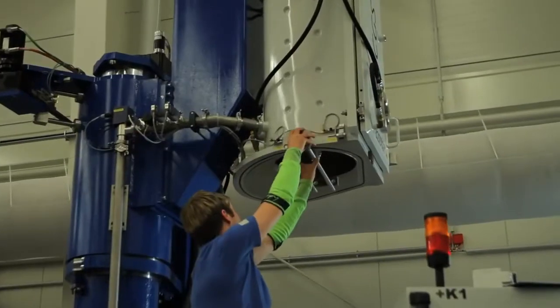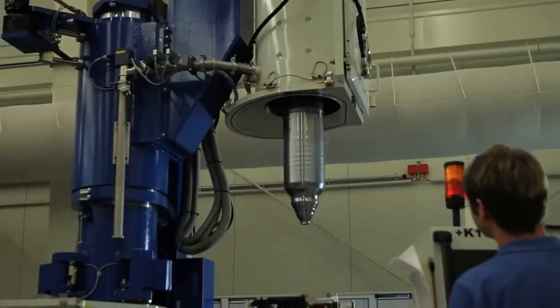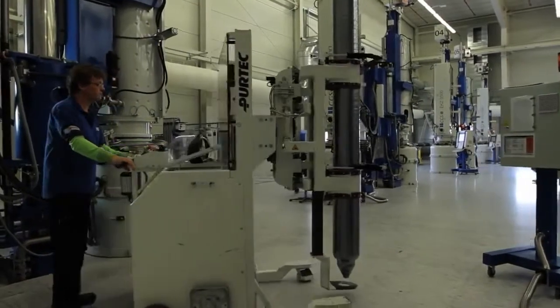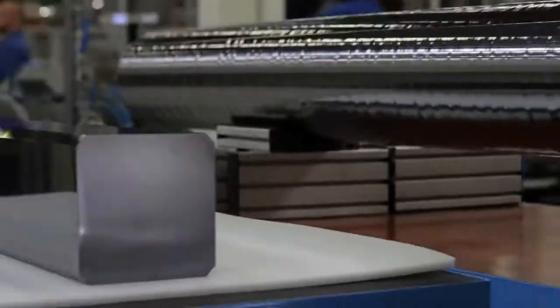Over four days, a silicon rod of up to 2.8 meters length takes shape. This basic round crystal, known as an ingot, is now cut into a rectangular shape.